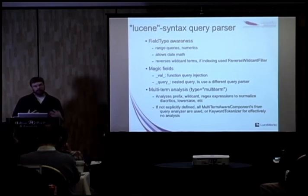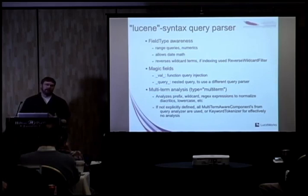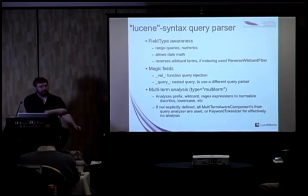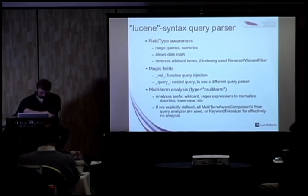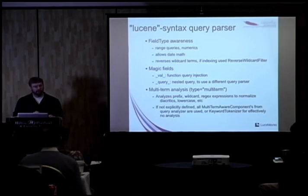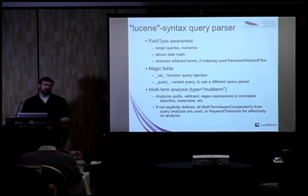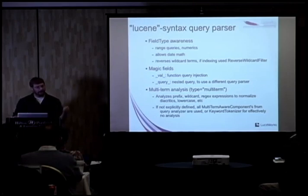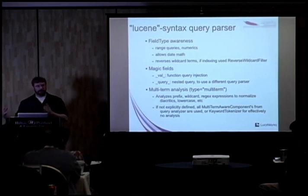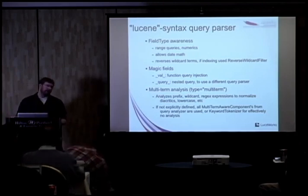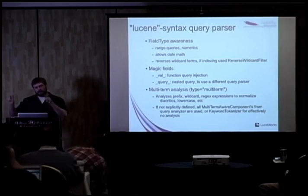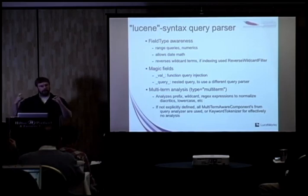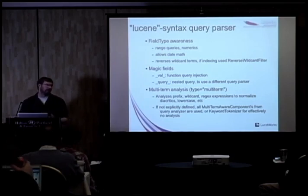The Lucene query parser syntax isn't really extensible other than the field name — you say field name colon, then expression. However, it has two backdoor special field names: underscore-val-underscore and underscore-query-underscore. The underscore-val-underscore maps to function queries, so you can say _val_: and then a function query expression. Likewise with underscore-query-underscore, you can put a quoted expression that selects a different query parser — you can use that for nested queries.